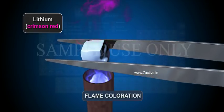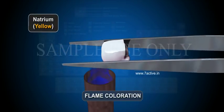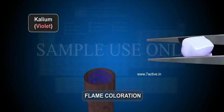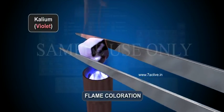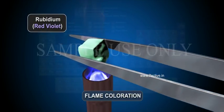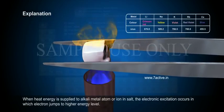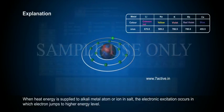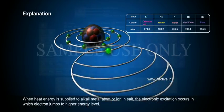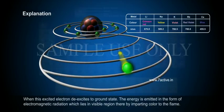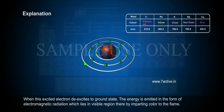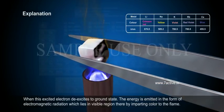Flame coloration. Explanation. When heat energy is supplied to alkali metal atom or ion in salt, the electronic excitation occurs in which electron jumps to higher energy level. When this excited electron de-excites to ground state, the energy is emitted in the form of electromagnetic radiation which lies in visible region thereby imparting color to the flame.